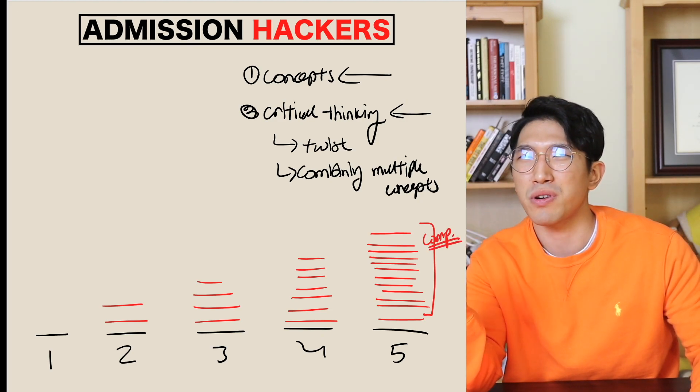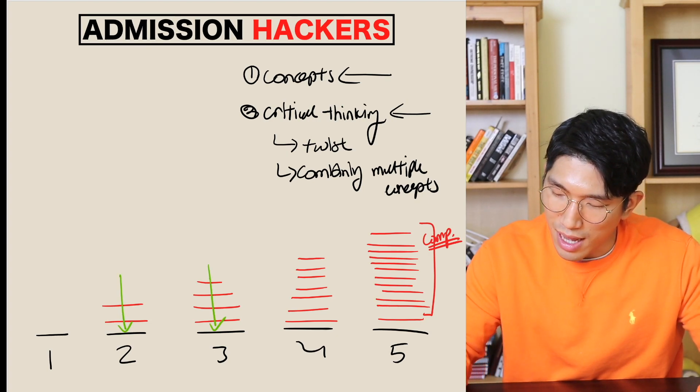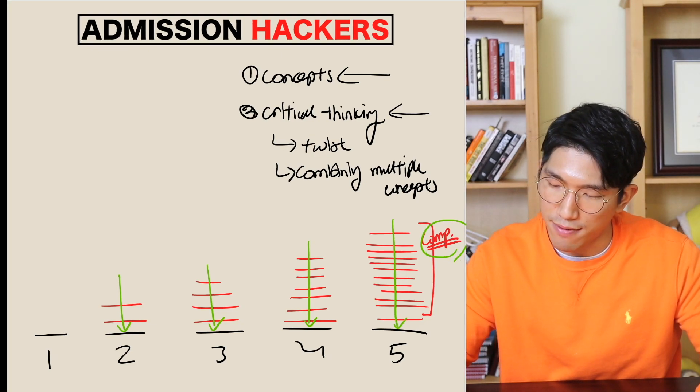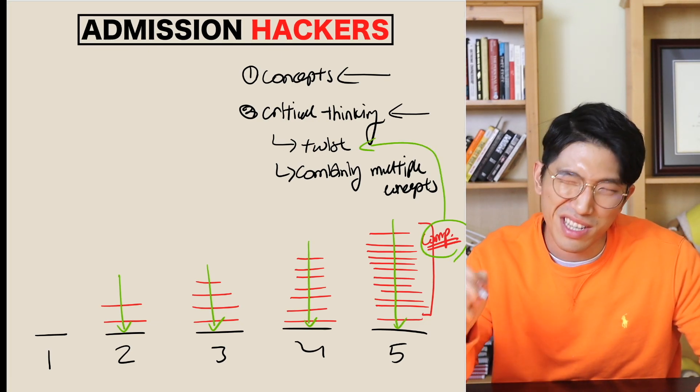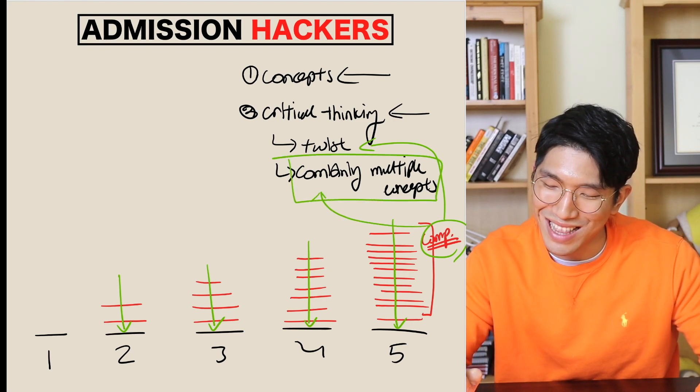And whether you can solve these questions or not comes down to just one thing, and that is your ability to see through these complexities and get to the answer. So what are all these complexities made out of? Well, it's either that they have twisted the concept around, or they're requiring you to use multiple concepts in a single question.